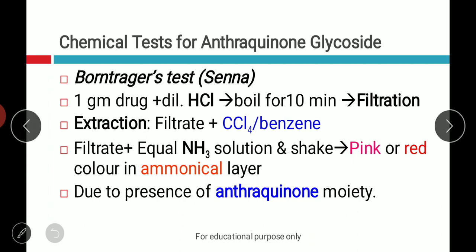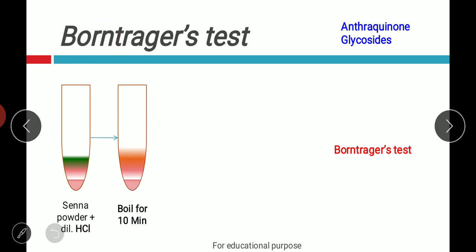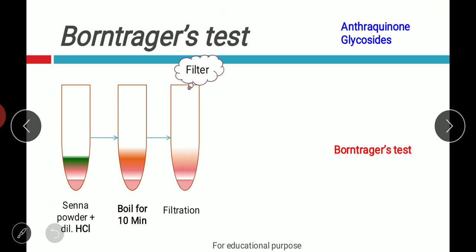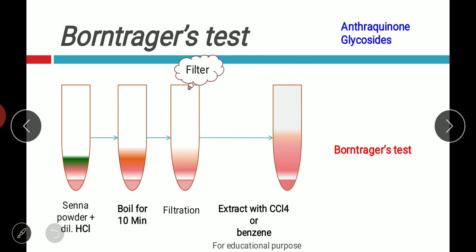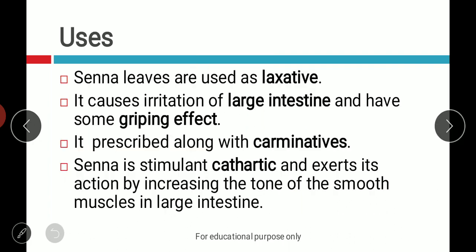In the Bornträger test we require senna powder and dilute HCl. The mixture is boiled for 10 minutes, then filtered. The filtrate is extracted with an organic solvent like CCl4 or benzene, then ammonia solution is added and shaken. After shaking we will get a pink or reddish color, which confirms that it is senna.